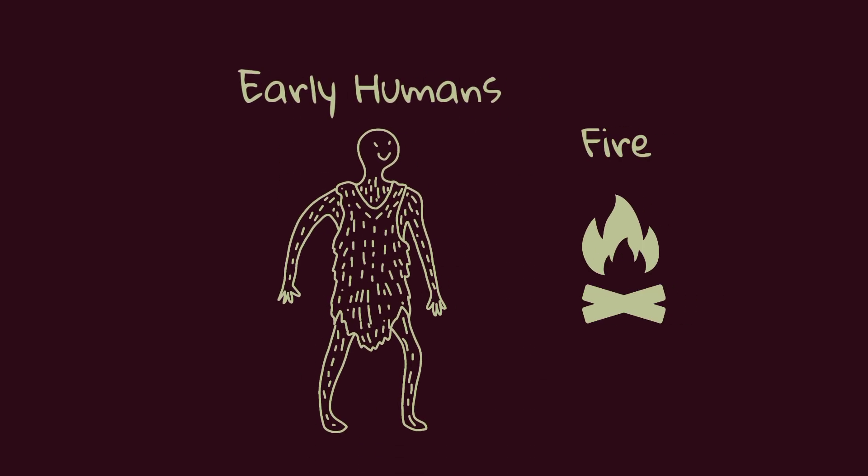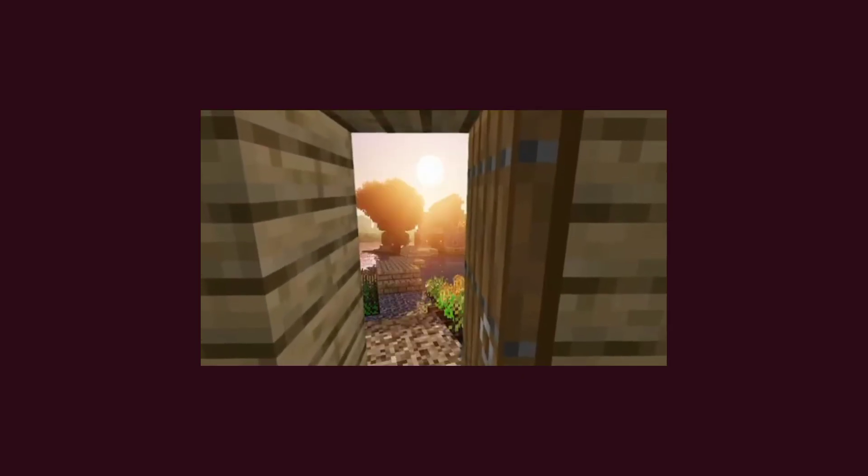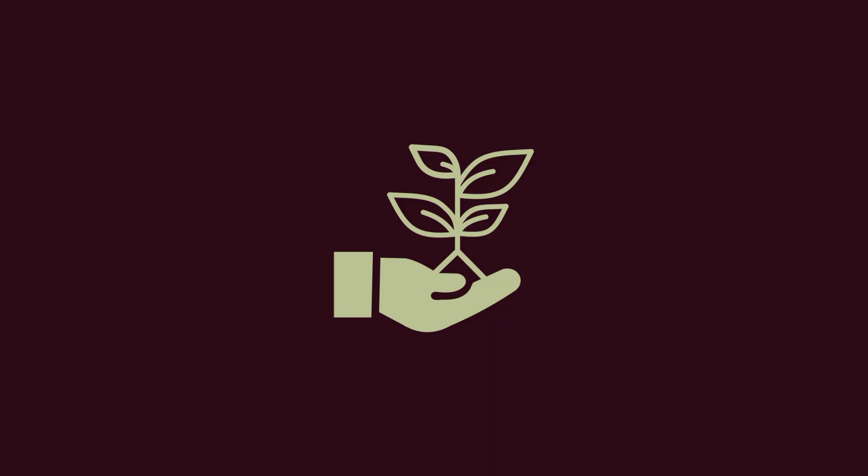When early humans discovered fire, they didn't just light up the darkness, they took the first step in chemistry. Unknowingly, they unlocked the door to science while striking stones together, shaping metals, or trying to make medicine from plants.